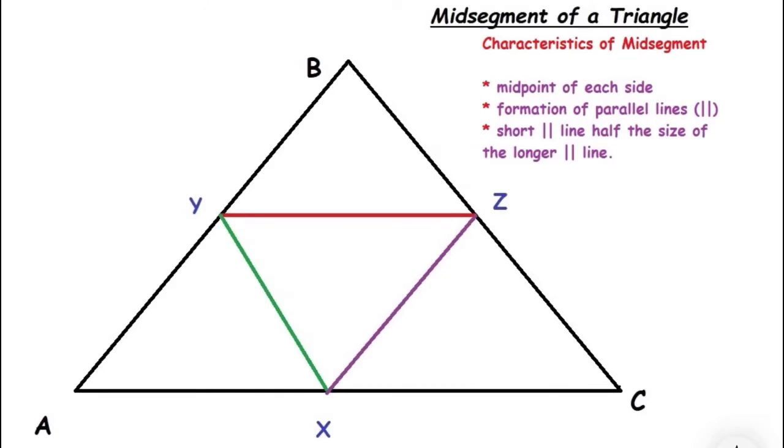In this case, AB has a midpoint at Y, BC has a midpoint at Z, and AC has a midpoint at X.